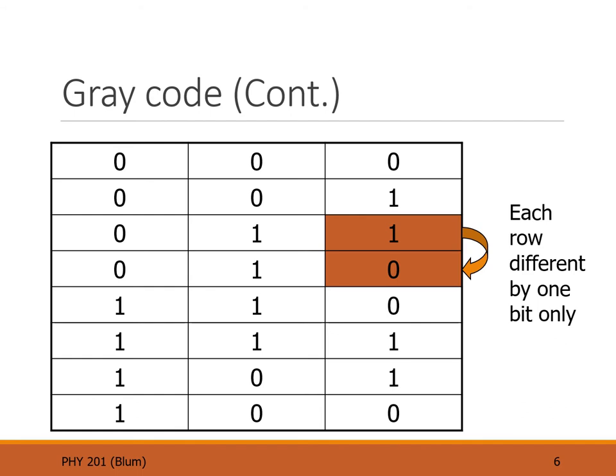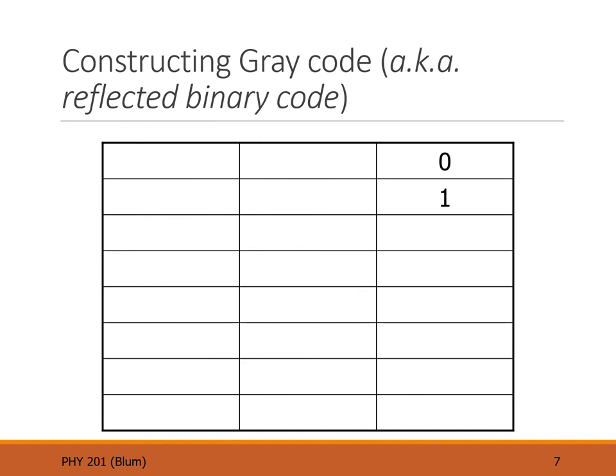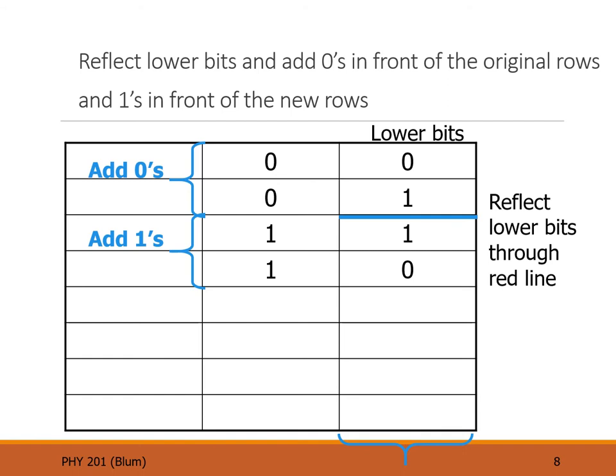This is the identifying property of gray code. One can construct gray code using a reflection operation. Starting in the right column with just zero and one, we reflect them: zero then one reflected becomes one zero. In the rightmost column we get 0, 1, 1, 0. In front of the original zero and one we place zeros, and in front of the reflection we put ones. This gives us gray code order where only one bit changes as we move from row to row.